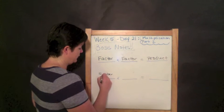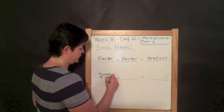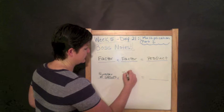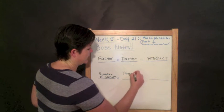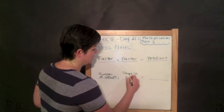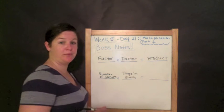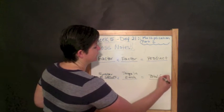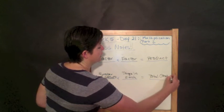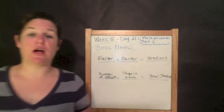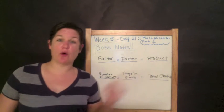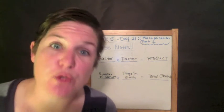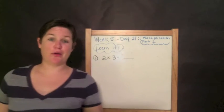Another way to represent multiplication: the number of groups times the things in each group equals the total. The total is also known as the product. So if you are ever trying to find the product, you are finding the total to a multiplication problem.